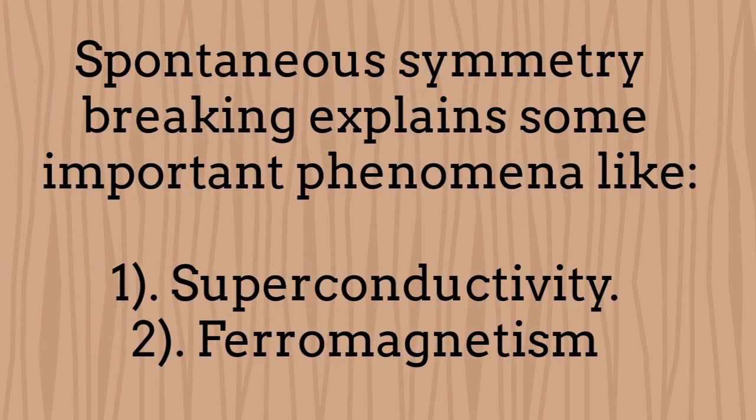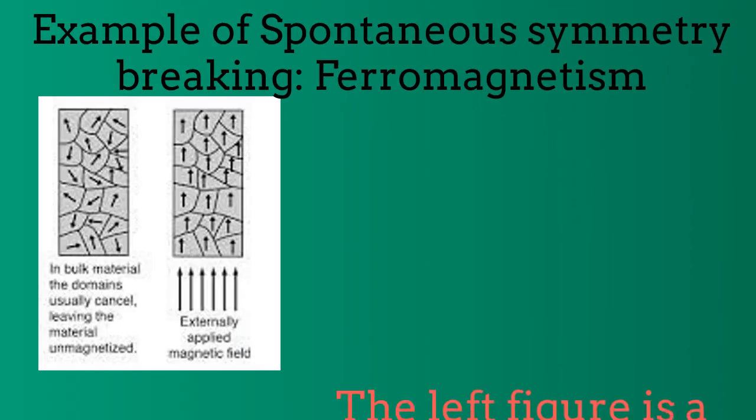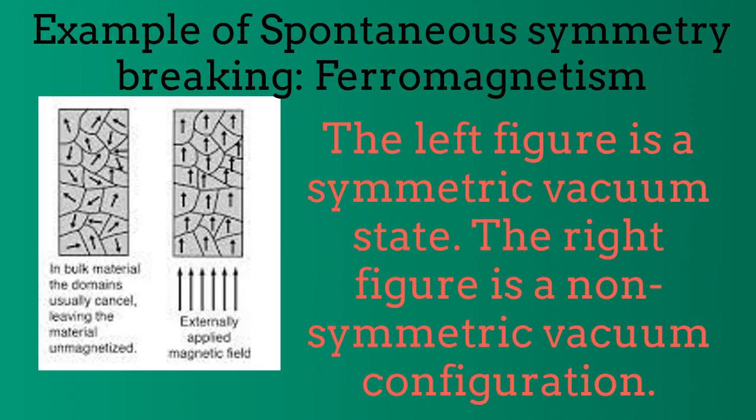By using spontaneous symmetry breaking, some important phenomena like superconductivity or ferromagnetism can be explained in a very natural way. In ferromagnetism, an ordinary ground state of the system is a random internal arrangement, which is symmetric under rotations. However, if we change the parameters of the system under some special circumstances, the standard vacuum state becomes unstable and a small magnetic field would be able to break the symmetry of the system in some particular direction. In such a case, the symmetry under rotation is spontaneously broken and we have a permanent magnetization.